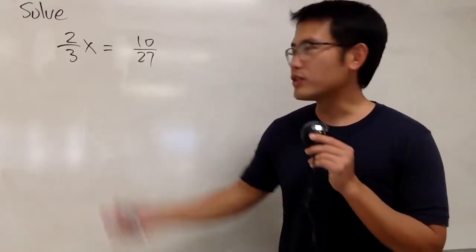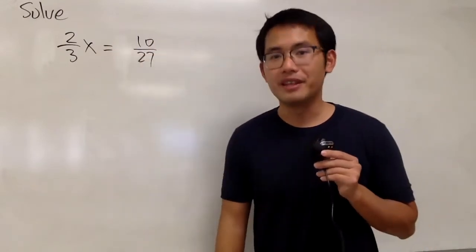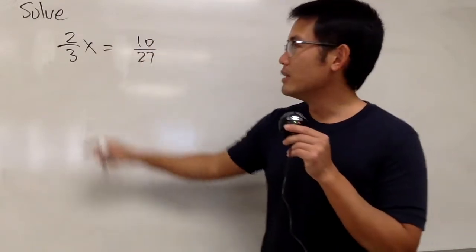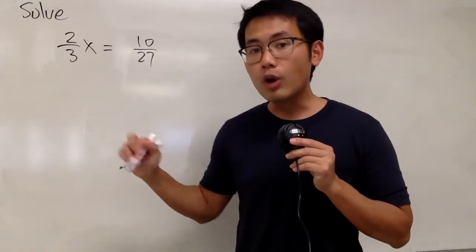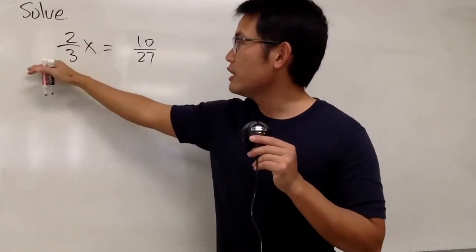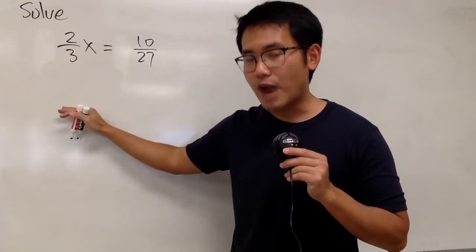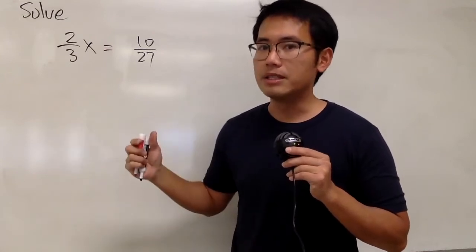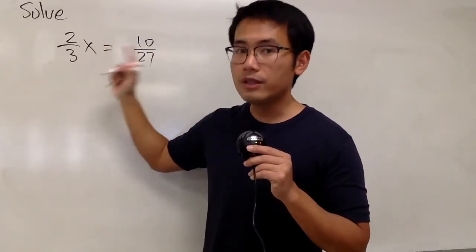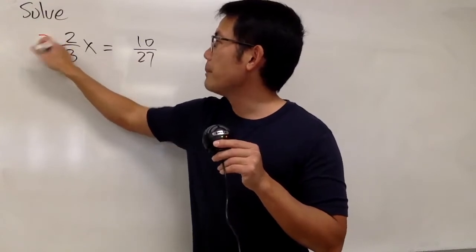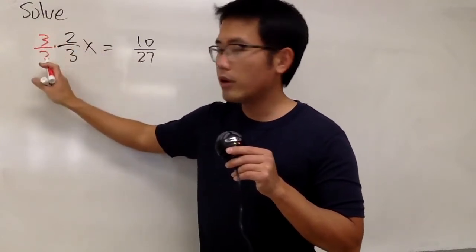We are going to solve the equation: 2 over 3x is equal to 10 over 27. Here we go. Notice that we have 2 over 3 times x. So, to get rid of the 2 over 3, we'll divide it by 2 over 3. By dividing a fraction, it's the same as multiplying by its reciprocal. So in fact, for this one, let me just multiply it by its reciprocal — namely the 3 over 2 right here.